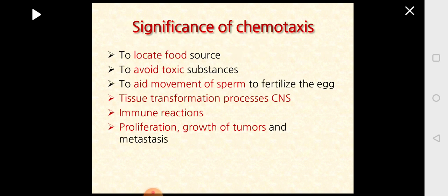The female silk moth releases the pheromone bombykol into the air, which can attract male moths from quite far away — the chemical is released into the air. In water, when paramecium encounters toxic chemicals, it tends to move away — this is called phobotaxis. The significance of chemotaxis includes helping animals locate food sources, avoid toxic substances, and in higher forms, guiding sperm movement in the female reproductive tract to reach and fertilize the egg. Chemotaxis also aids nervous system development and plays a major role in immune reactions and tumor proliferation, including metastasis in cancerous cells.